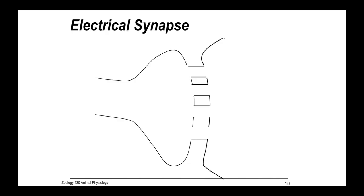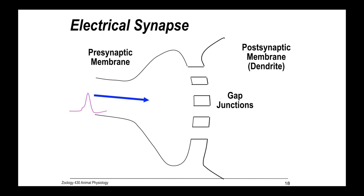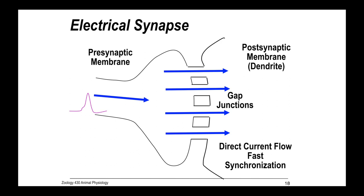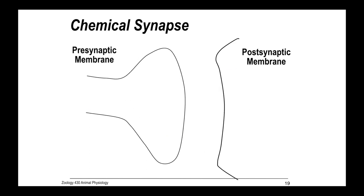Remember the electrical synapse? We have some examples of this in the heart, in giant axons in earthworms, and in the vertebrate retina. Basically, we have the presynaptic membrane and the postsynaptic membrane, or dendrites, and gap junctions connecting the two. When we have an action potential traveling down the presynaptic membrane, that electrical impulse just continues through. We have a direct flow of current, and this promotes fast conduction and synchronization.